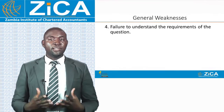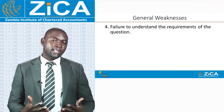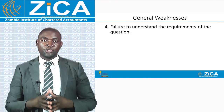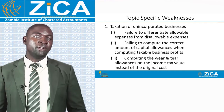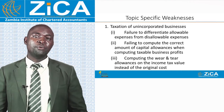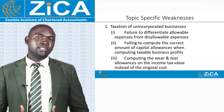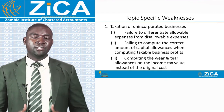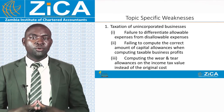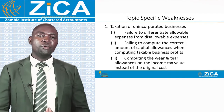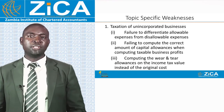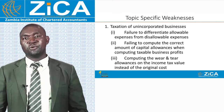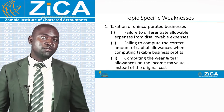Another weakness is failure to understand the requirements of the question — candidates do not read carefully to understand what is required before starting to answer. There is also difficulty in differentiating allowable expenses from disallowable expenses. When a question starts from net profit, candidates are required to identify which expenses are allowable for tax purposes and which are disallowable; disallowable expenses are supposed to be added back to the net profit.